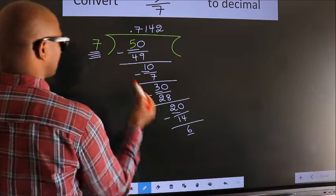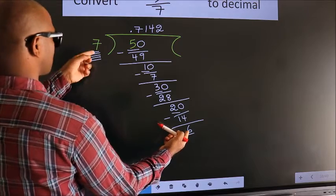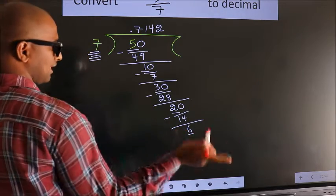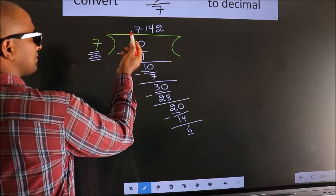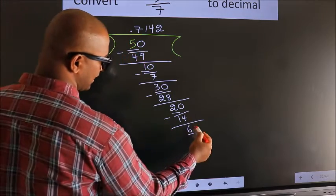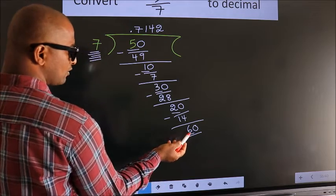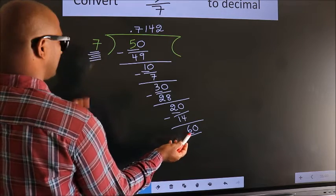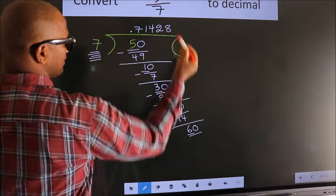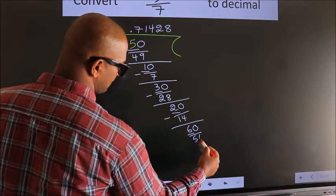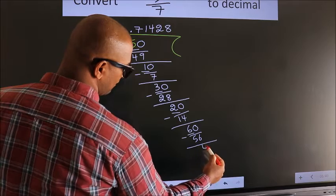Here we have 6, here 7. 6 is smaller than 7. And we already have the decimal, so we can directly take 0. So, 60. A number close to 60 in the 7 times table is 7 eights: 56. Now we subtract. We get 4.